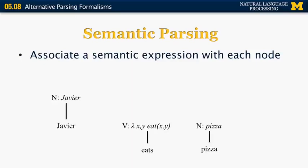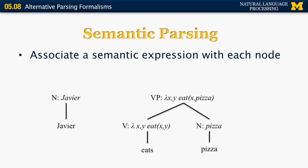To combine this lambda function with its arguments, we first combine 'eat' and 'pizza' by substituting pizza for y, yielding a new function with y bound to pizza and x still an unbound variable. At the next stage, this verb phrase combines with the noun Javier, substituting Javier for x. The full meaning of the sentence is the predicate 'eat' with first argument Javier and second argument pizza. Semantic parsing is one of the hottest areas in NLP — look at recent ACL literature for more detail.